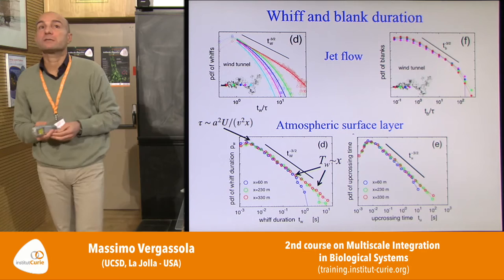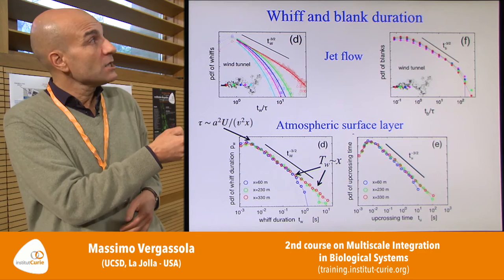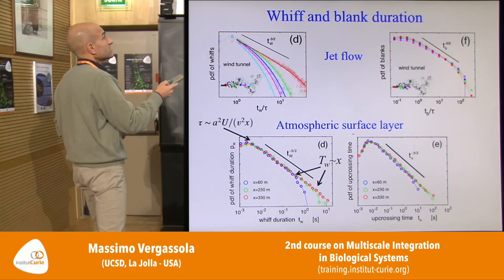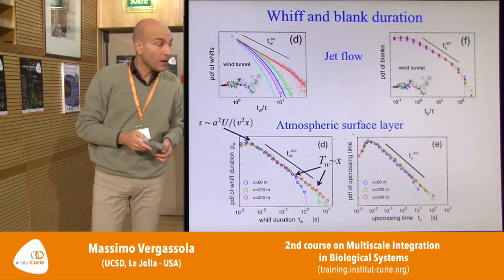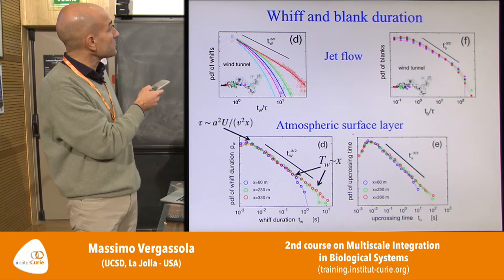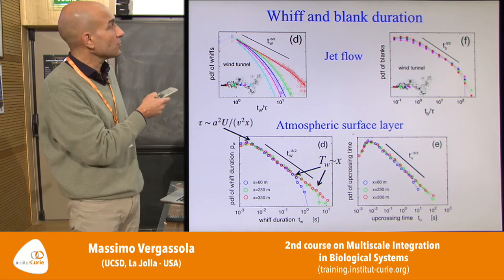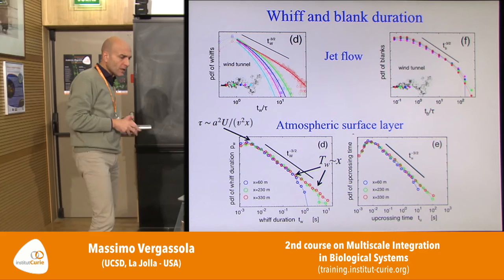Checking in data: jet flow experiments show this distribution for widths and blanks. The most interesting case is the atmospheric surface layer — outside in the field — where you can reach distances comparable to real moth distances, hundreds of meters. There you see a very clean t^(-3/2) power law with a small-scale cut-off that goes like 1 over the distance to the source, and a large cut-off at long durations that scales like x, the distance to the source — exactly as predicted.